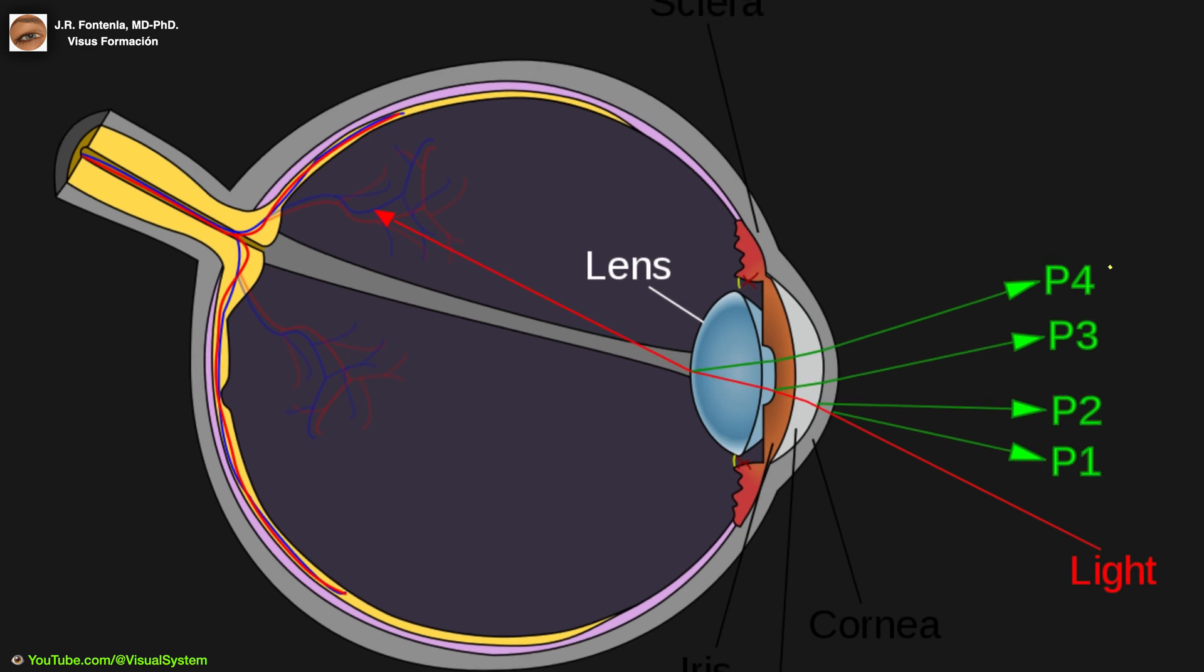Light reflected from the anterior and posterior surfaces of the lens can, in turn, be reflected back into the eye from the posterior surface of the cornea. In this way, the third and fourth Purkinje images can be visible from within the eye itself.